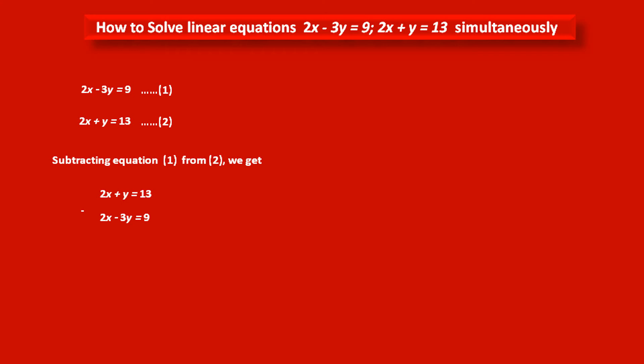Minus, now we have to write equation number 1: 2x minus 3y equals 9. We have to subtract these two equations, their corresponding terms. Now see, what is the answer?